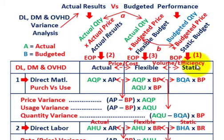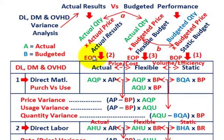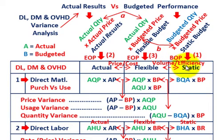First you would have your static amount or your standard amount that you established based on your budgeted budgets for the period. That would be done at the beginning of the period, and then at the end of the period you'd know your actual results. Knowing your actual results at the end of the period and what you've established as your static or standard amount at the beginning of the period, you can determine your flexible budgeted amounts, and that would be done at the end of the period.